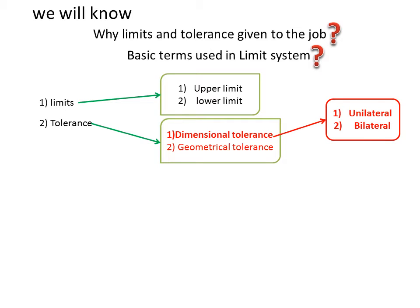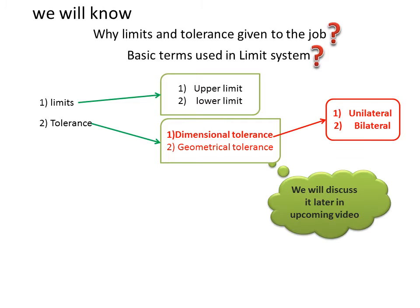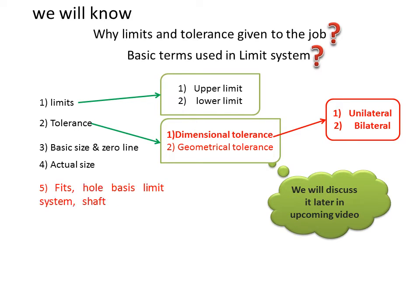Dimensional tolerance is further classified into unilateral and bilateral tolerance, which we will discuss in upcoming videos. Number three is basic size and zero line. Number four is actual size. And number five is hole basis and shaft basis limit systems.